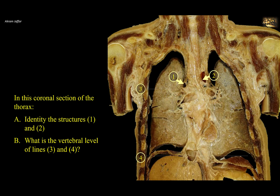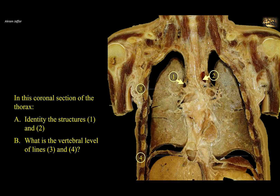In this coronal section of the thorax, identify the structures 1 and 2. What is the vertebral level of lines 3 and 4? Note the lungs and the structures forming the roots of each lung — for example, the right and left main bronchi, the right pulmonary artery, and the left pulmonary artery. Since the section is coronal, structures 1 and 2, whose cross-sections appear circular, are directed anteroposteriorly. Each forms an arch above the root of a lung. Vessel 1, located on the right side, arches above the root of the right lung — this is the arch of the azygous vein, on its way to open into the superior vena cava.